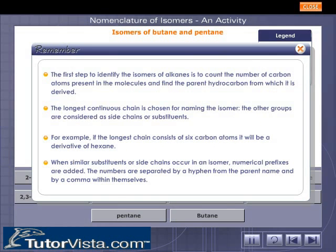In this activity, let's get familiar with the isomers of butane and pentane. Observe the structure of each isomer carefully and determine the IUPAC name of each. Click on the correct IUPAC name from the options given.